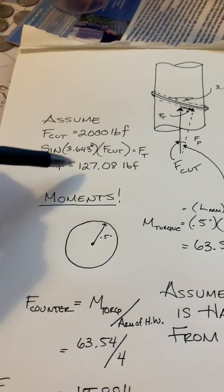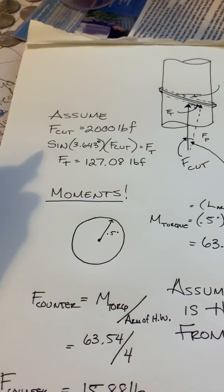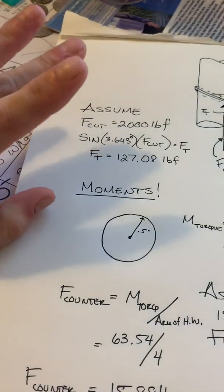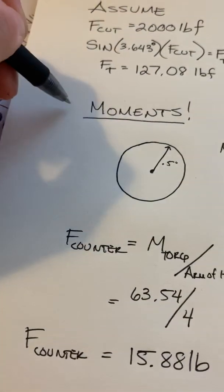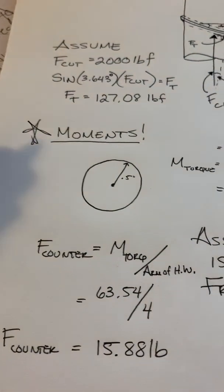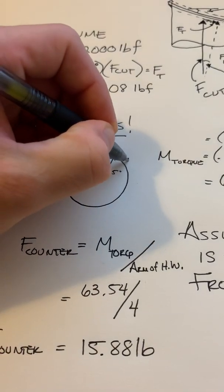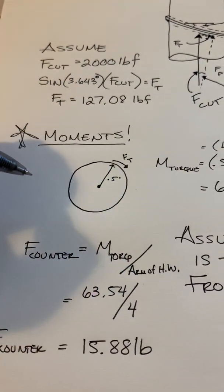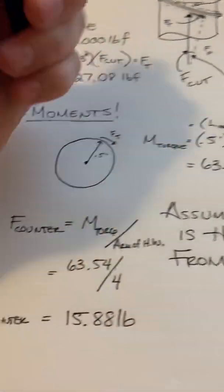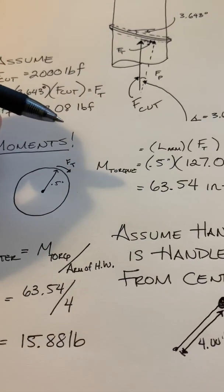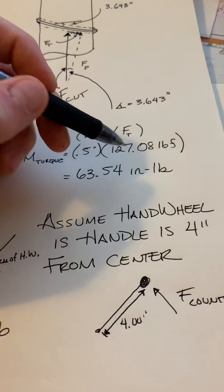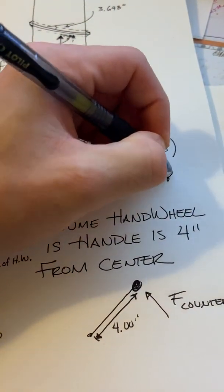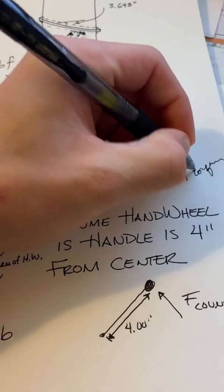So anyway, back to it. We got 127.08 pounds force. I know a lot of guys want to just slam their fist and go, yeah, I knew it, it would break your wrist. No, not there yet. Give me a moment. Let's get talking about moments. Okay. So that force is being transmitted up here. F T. All right. And it's a half inch from the center. So we need to know how much torque that's generating. Because if it's going to twist your wrist off, it would have to be done by a torque. So, half an inch times that force, we get 63.54 inch pounds of torque.